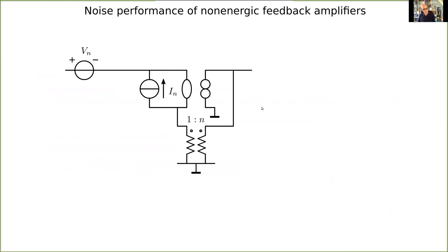Here we have a voltage amplifier — we sense the voltage in parallel and compare the voltage in series. This is a non-energic voltage amplifier with a transformer, and here we have the noisy nuller as the controller with noise sources added. The question is: can we find the equivalent input noise sources of the amplifier? If the equivalent input noise sources of the amplifier — the voltage and current noise — equal those of the controller, then we may conclude that negative feedback in this case does not deteriorate the signal-to-noise ratio.